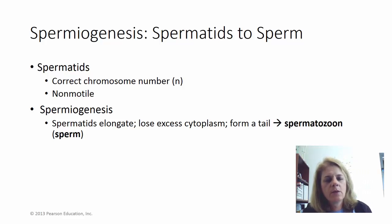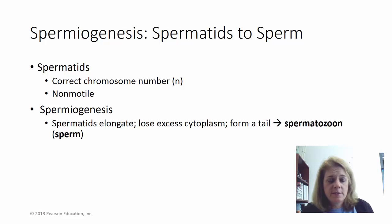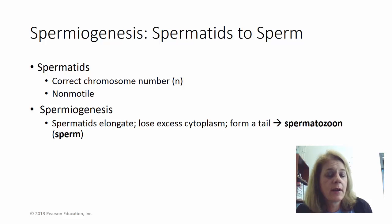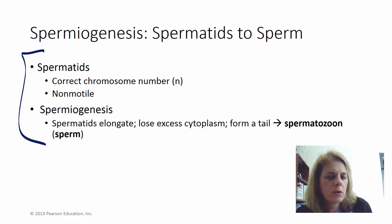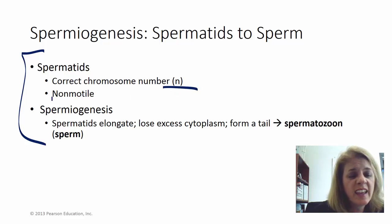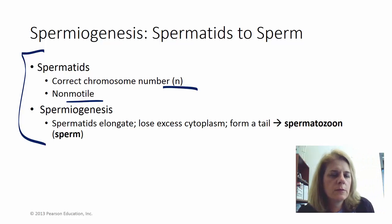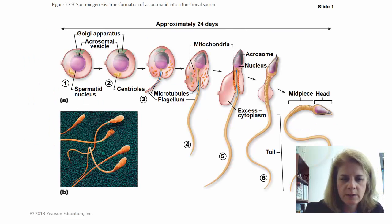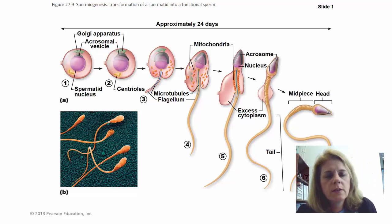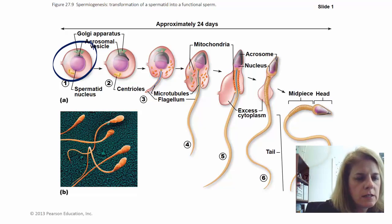Watch those earlier videos on meiosis — they'll help. So the spermatids now have the right number of chromosomes — they're 1n — but they can't swim yet. We need to build a tail. We need to take these spermatids and turn them into functional sperm.